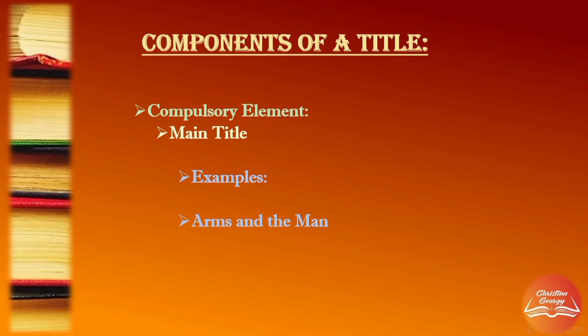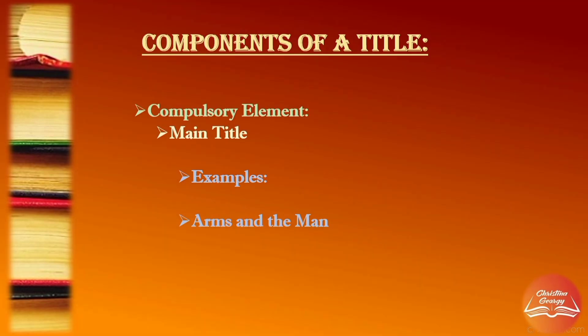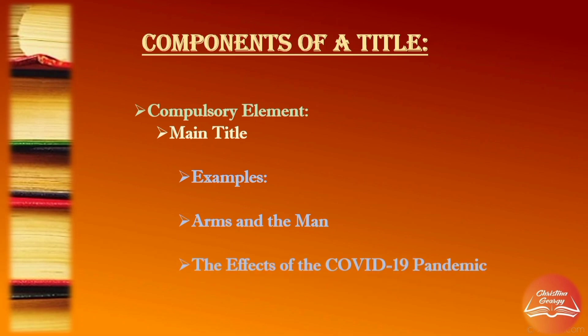Moving on to the second example, suppose we are about to write an article regarding the pandemic and its consequences, and for this write-up we have to put a title. The title we put is: The Effects of the COVID-19 Pandemic. If you want to be specific, you can add on 'on Young Adults' or something like that. Let this be the title for now.